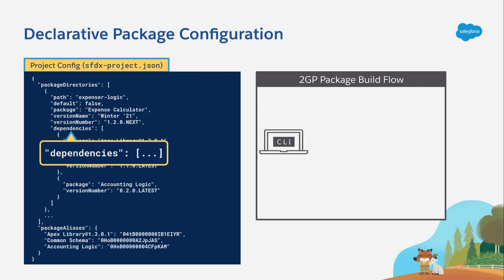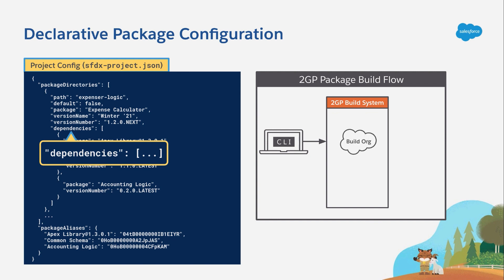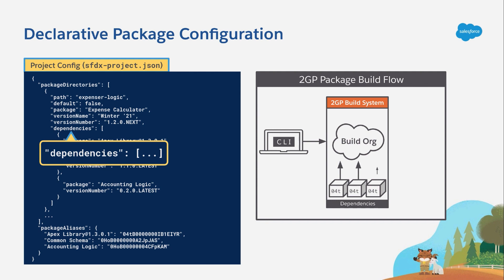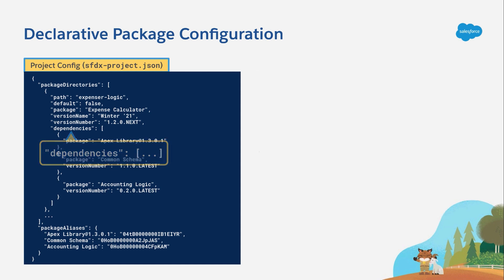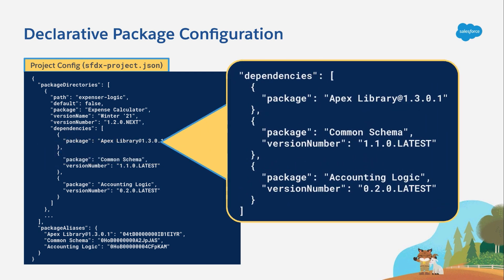What's actually going on is that the CLI is sending the source of your package into the 2GP build system, where a special kind of scratch org called a build org is created in the background. You don't get to see it or touch it — you might never even know it was there. This build org is used to validate the contents of your package. If your package depends on other packages, those packages need to be installed in the build org first. Assuming everything goes well and your package is valid, a new package version is created. Now that you understand the 2GP build system, this dependencies declaration is going to make a lot more sense.